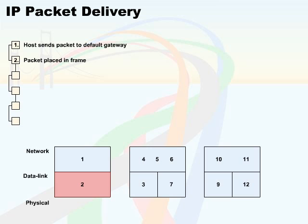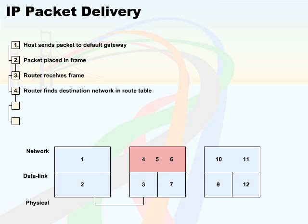This is how we're going to be delivering data to a remote network. The packet itself will be placed into a frame at the data link layer, and this will then be passed across the physical layer where a router in between will receive the frame. The router will use its route table to choose the next hop towards the destination.